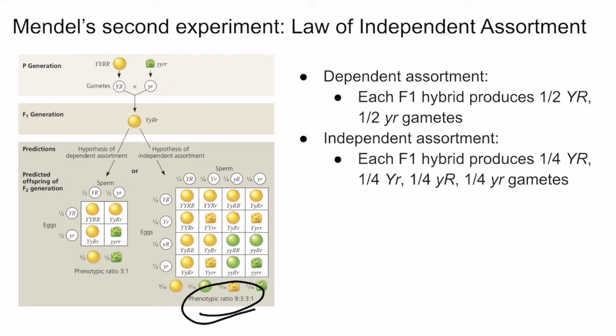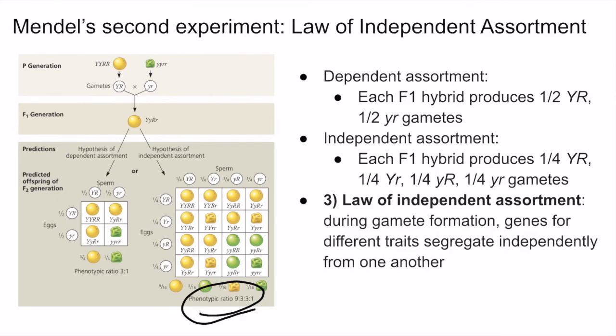Therefore, Mendel concluded that the law of independent assortment was true. The law of independent assortment states that during gamete formation, genes for different traits segregate independently from one another and are passed independently from parents to offspring.